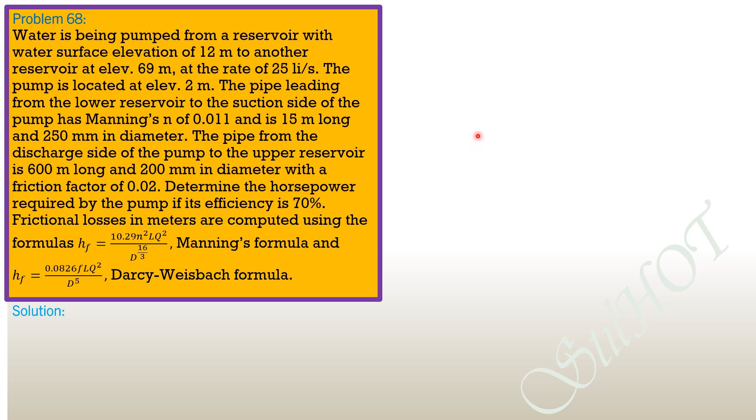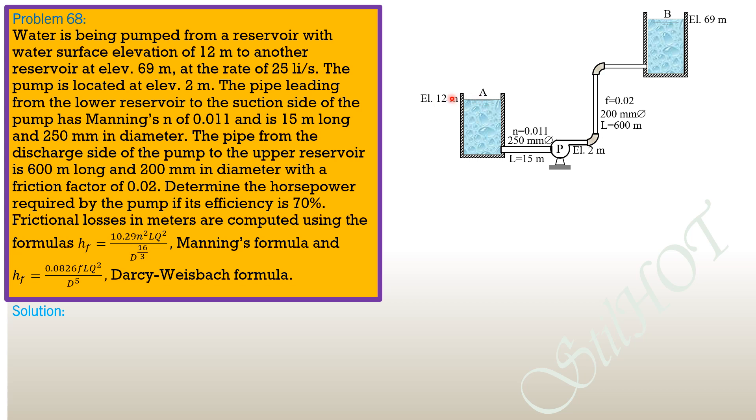For the solution, let's have a diagram first to help analyze this problem. The lower reservoir is at elevation 12, the upper reservoir at elevation 69. We'll call the water surfaces in the reservoirs as A and B. For the suction side of the pump, the pipe is 15 meters long, 250 mm in diameter, and has Manning's n of 0.011. The pump is at elevation 2 meters. The discharge side has friction factor by Darcy-Weisbach of 0.02, 200 mm in diameter, and length 600 meters.